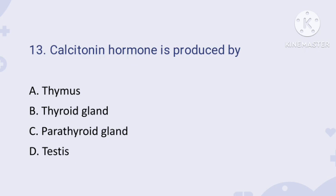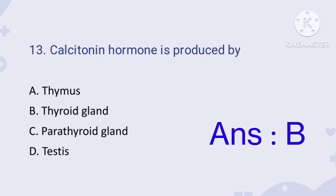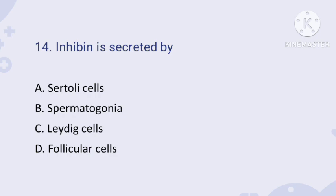Question number thirteen: calcitonin hormone is produced by — option A: thymus, option B: thyroid gland, option C: parathyroid gland, option D: testis. The correct answer is thyroid gland. Thyrocalcitonin (calcitonin) decreases the calcium level in the blood and is produced by the thyroid gland. Answer is B.